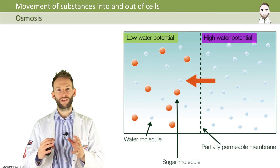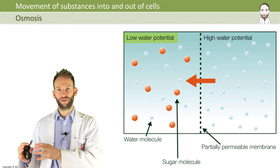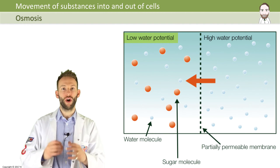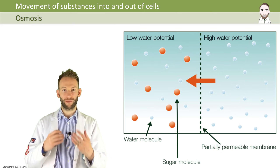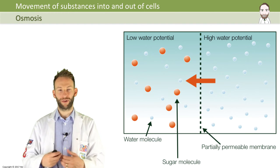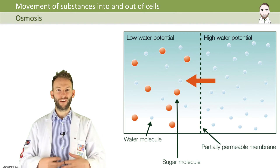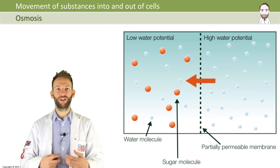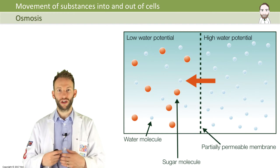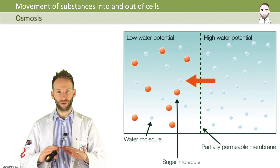Water moves from high water potentials to low water potentials across a partially permeable membrane. So the more stuff you dissolve in water, whether it's sugar or salt, the lower the water potential goes.